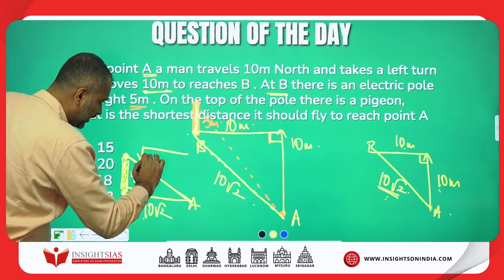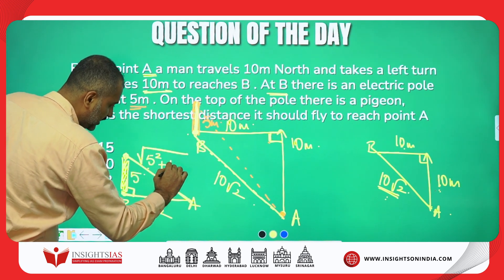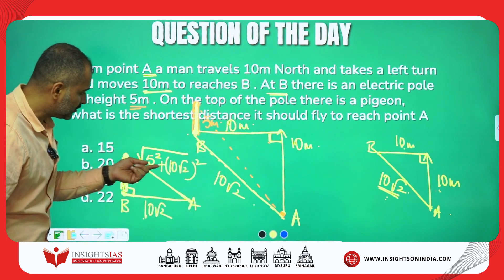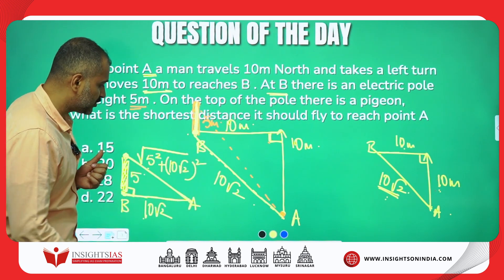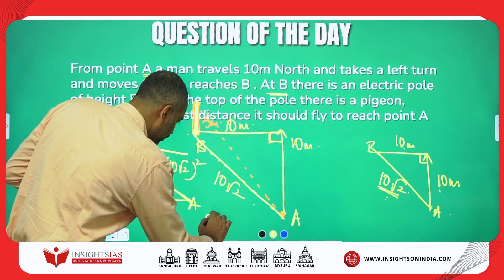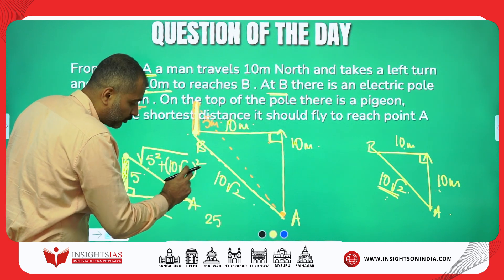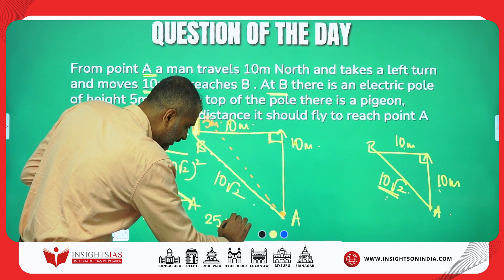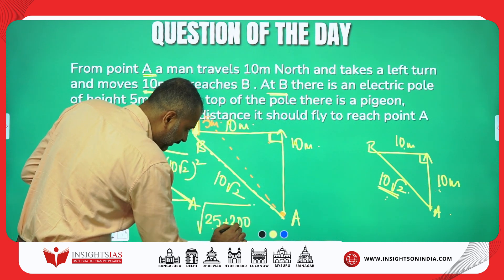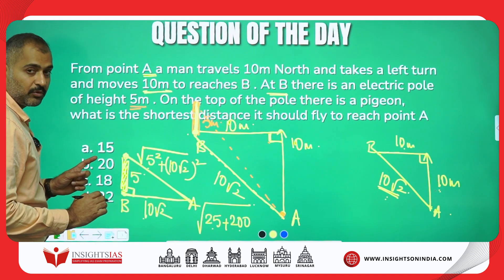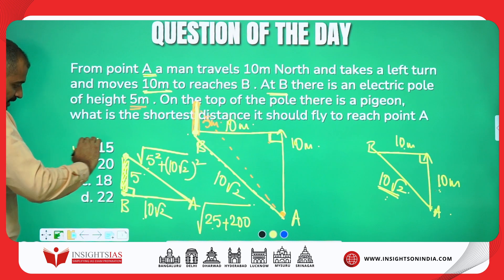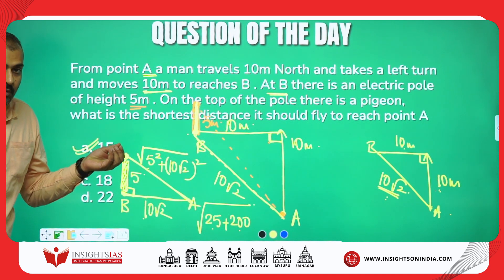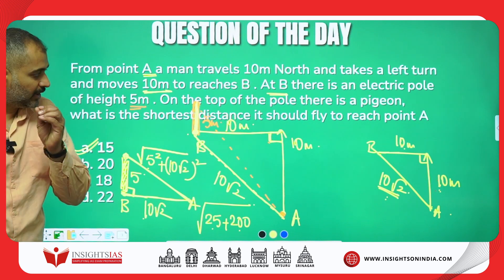Now applying Pythagoras: √(5² + (10√2)²). 5² is 25. (10√2)² = 10² × (√2)² = 100 × 2 = 200. So it becomes √(25 + 200) = √225 = 15. The answer is 15.